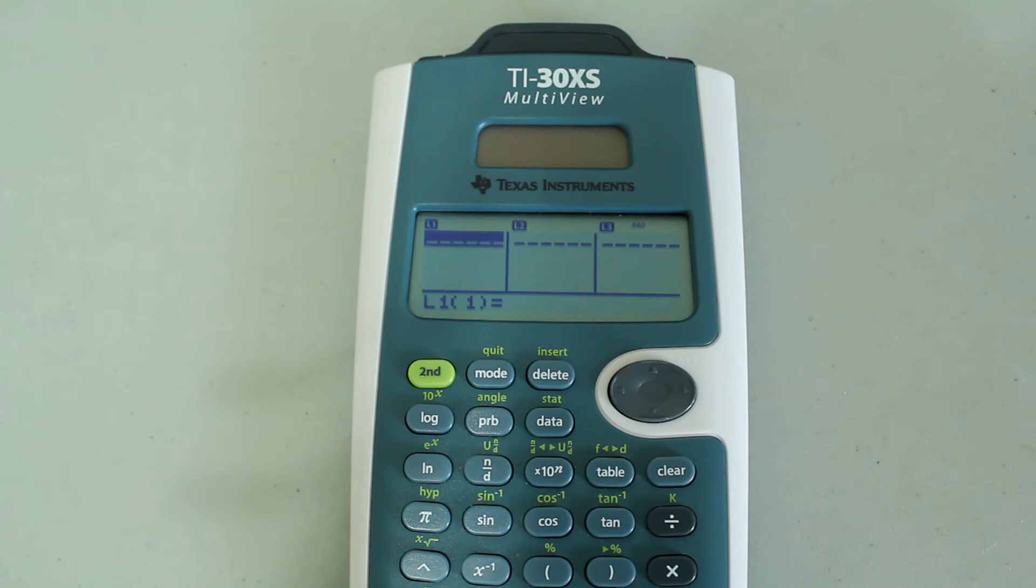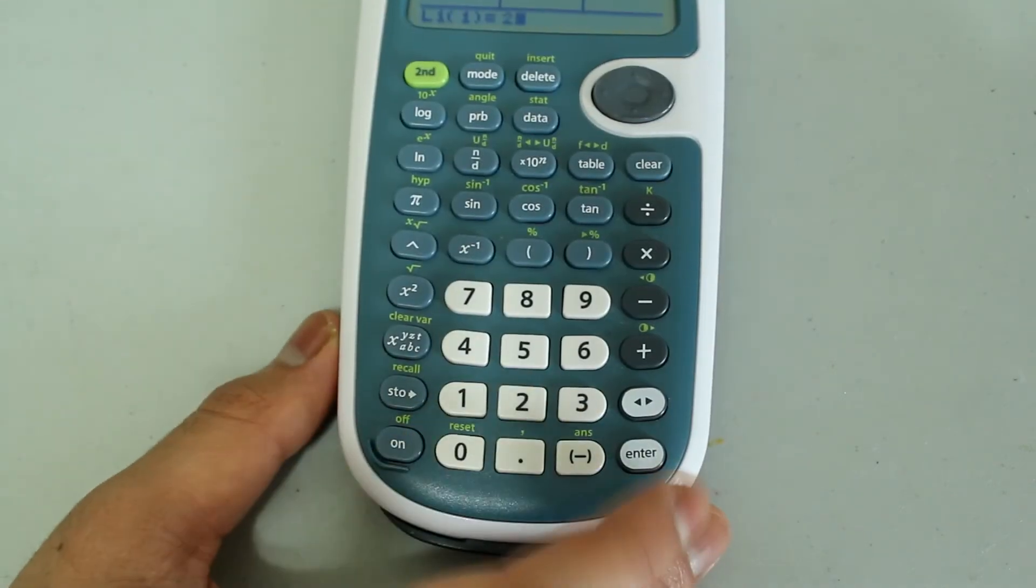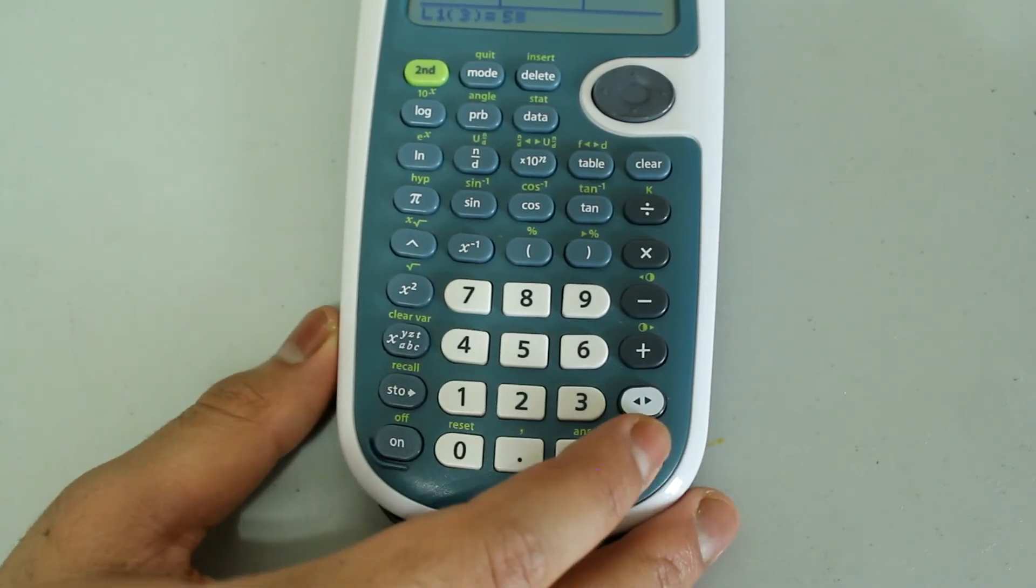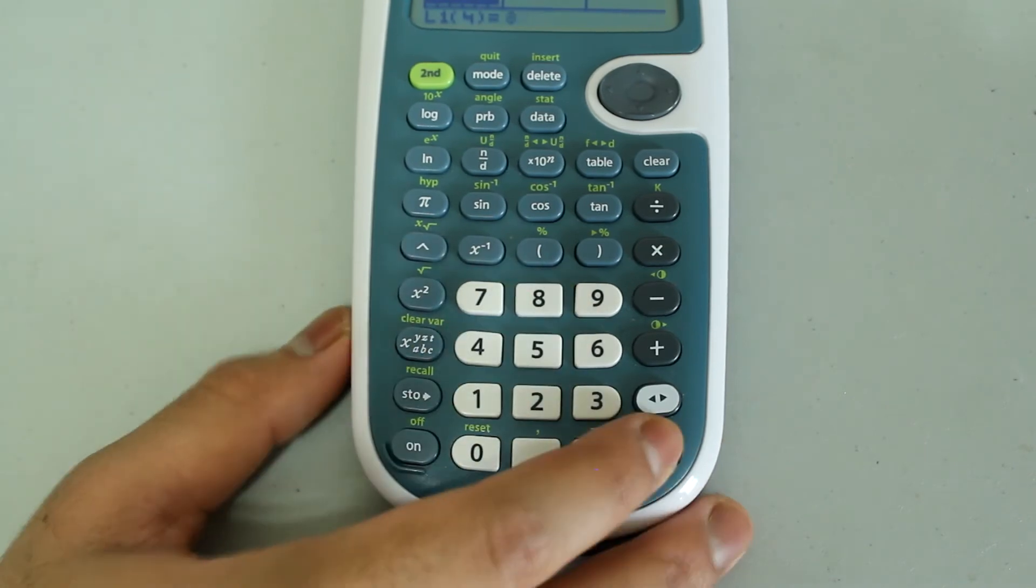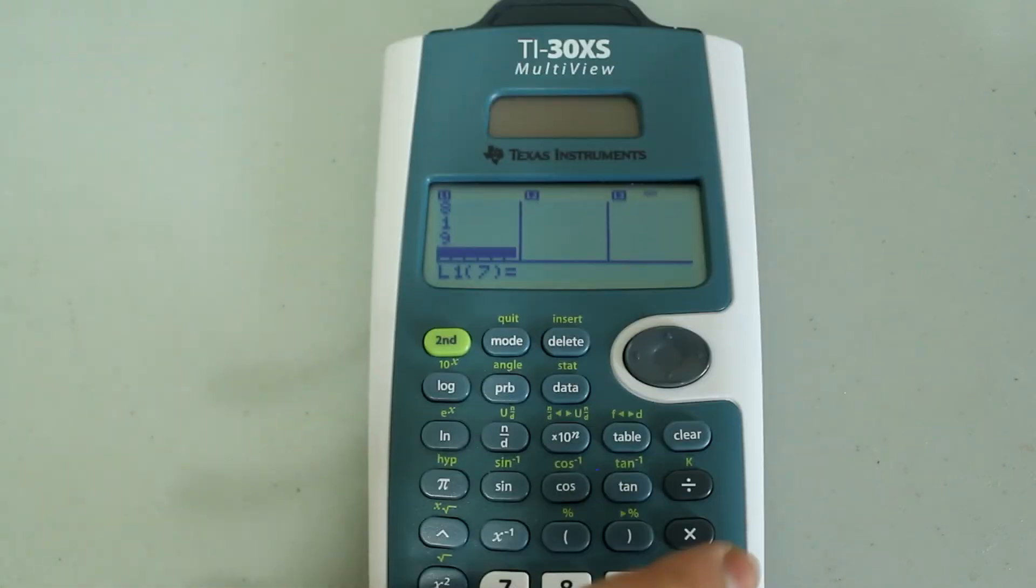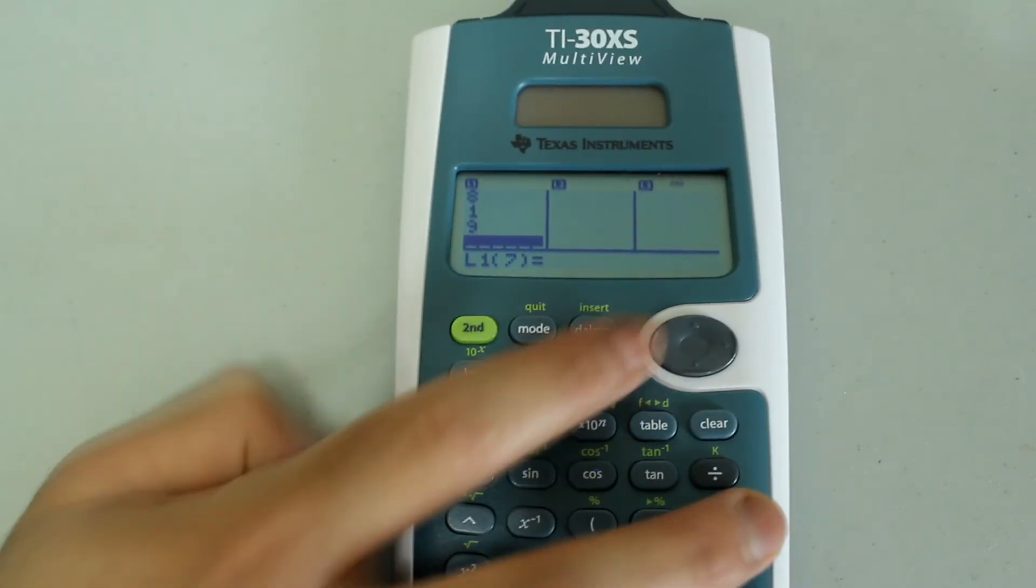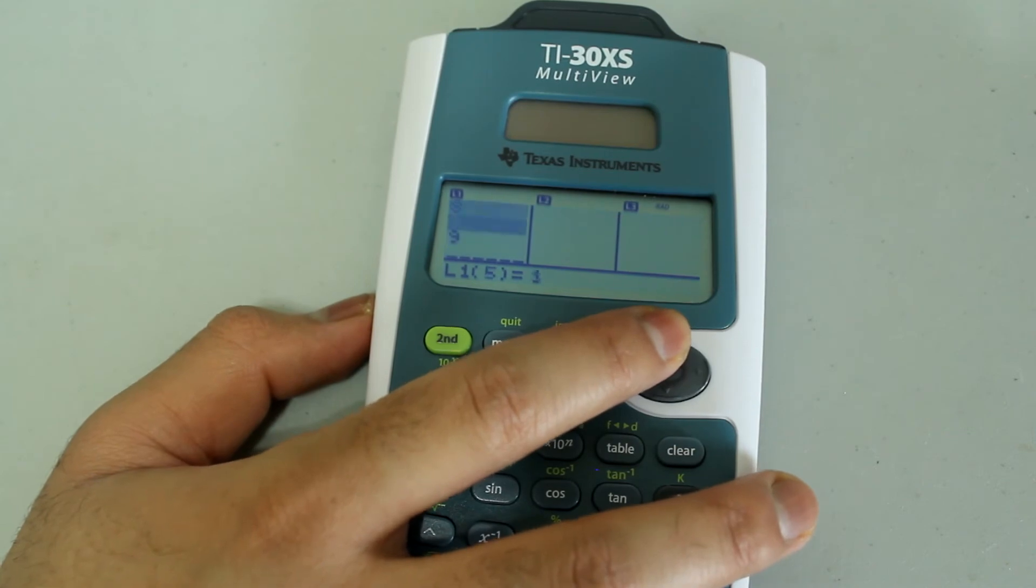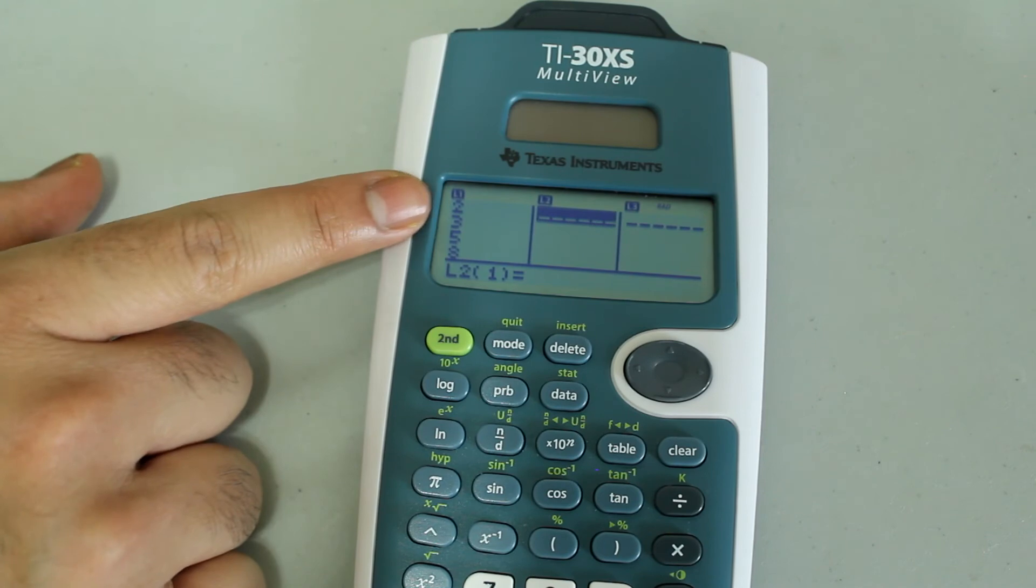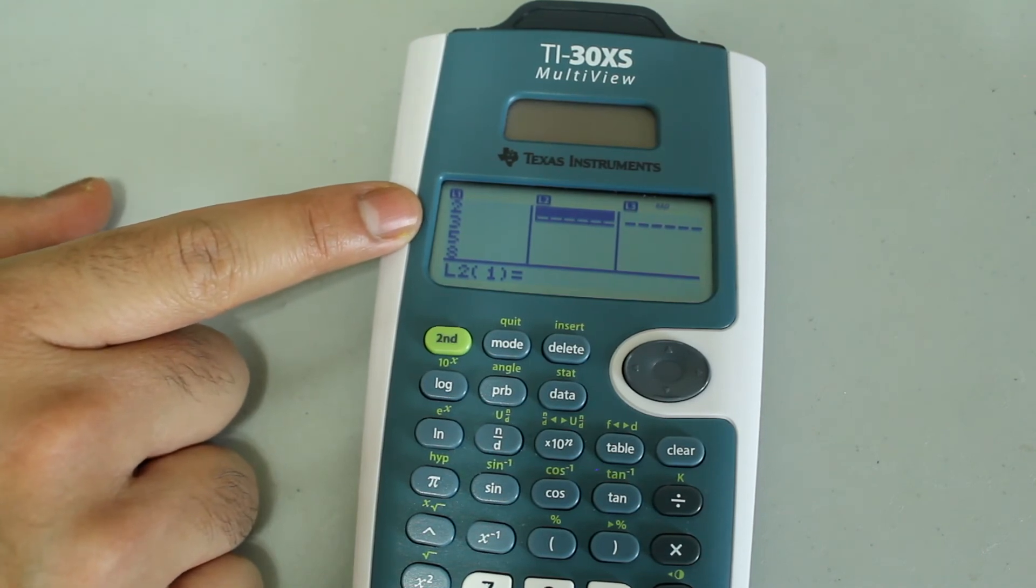In L1, I'm going to type in the data points, and in L2, I'm going to type in how many times that data point is repeated. So in L1, I'm going to type in 2, press enter, 3, press enter, 5, enter, 8, enter, 1, enter, and 9, enter. So in L1, I'm going to type in L2, and next to each data point, I'm going to type in how many times it appears.